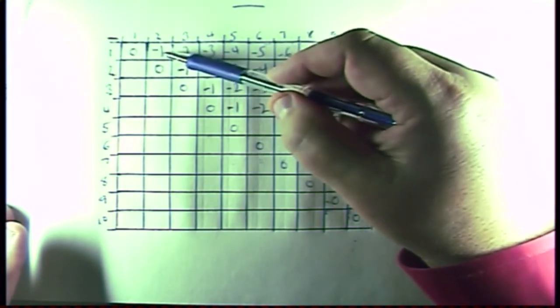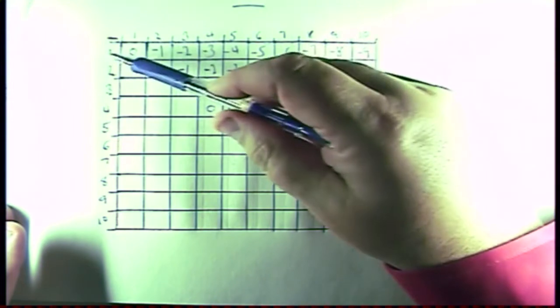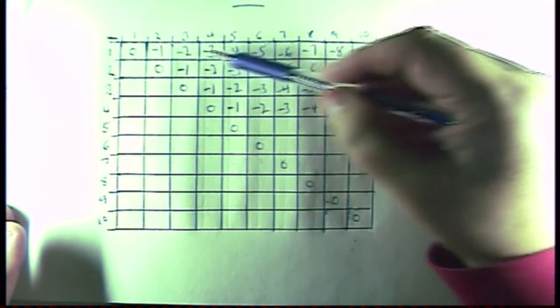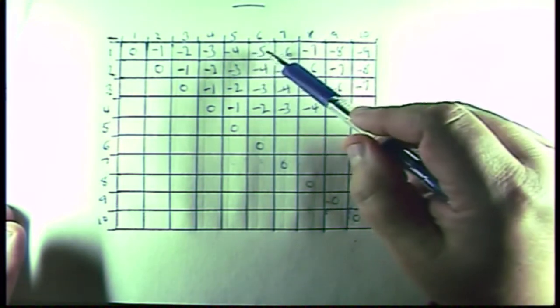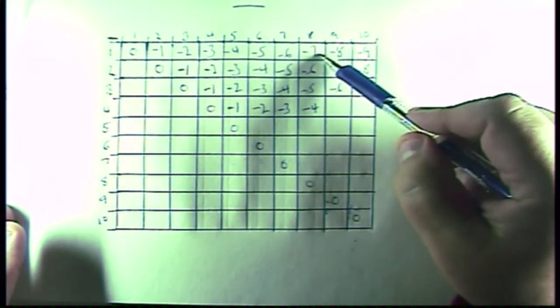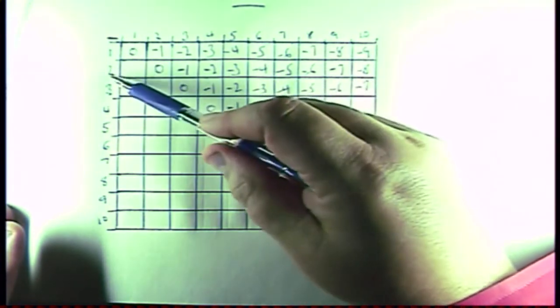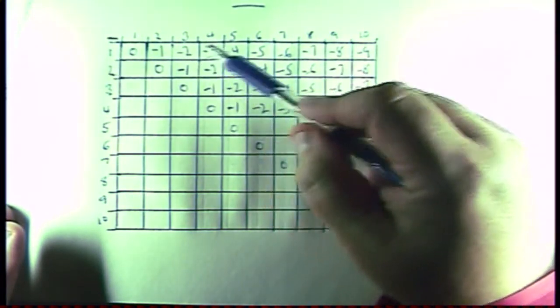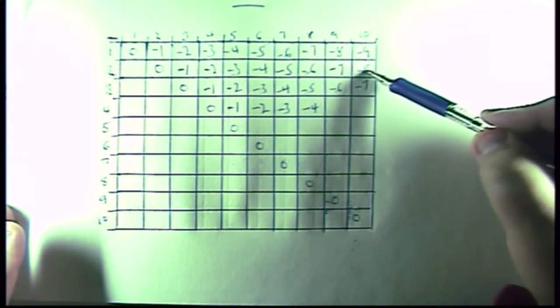1 minus 2 is a minus 1. 1 minus 3 is a minus 2. 1 minus 4 is a minus 3. So we had a trend here. So we went minus 1, minus 2, minus 3, minus 4, minus 5, minus 6, minus 7, minus 8, and minus 9. Same thing here. 2 minus 3 is a minus 1. 2 minus 4 is a minus 2. Same trend. Minus 3, minus 4, minus 5, minus 6, minus 7, and minus 8.